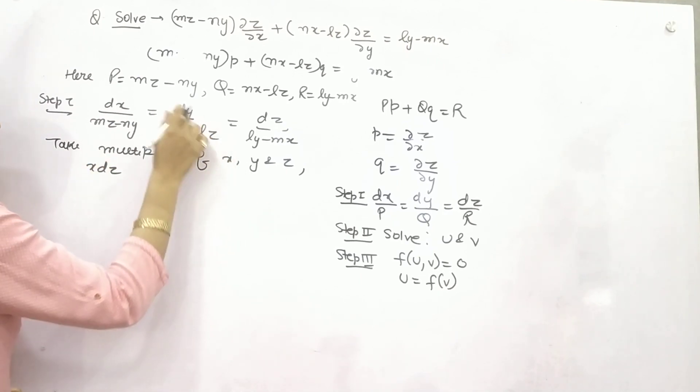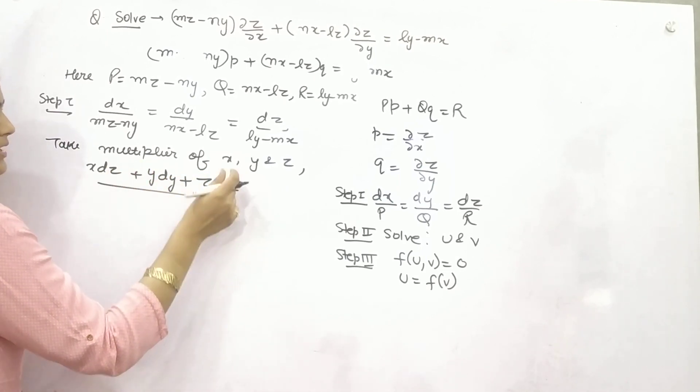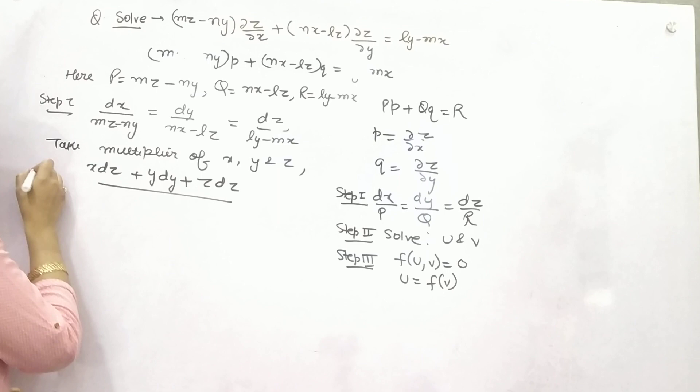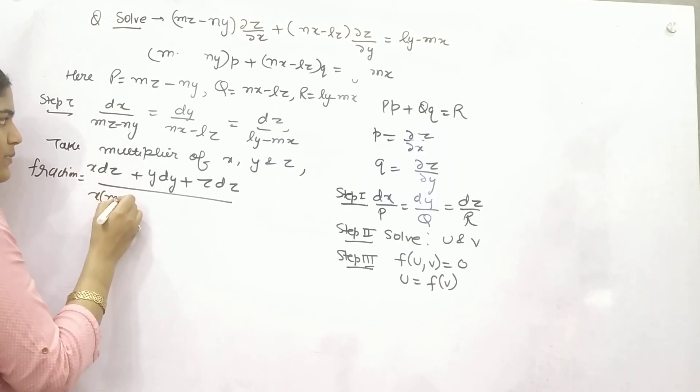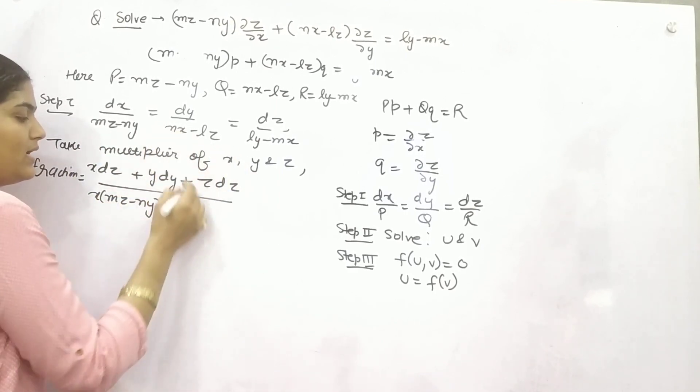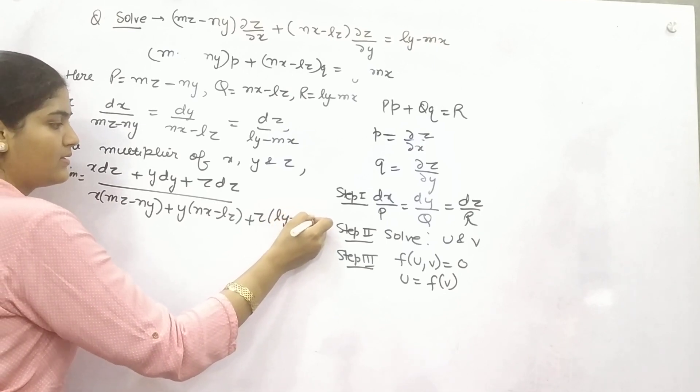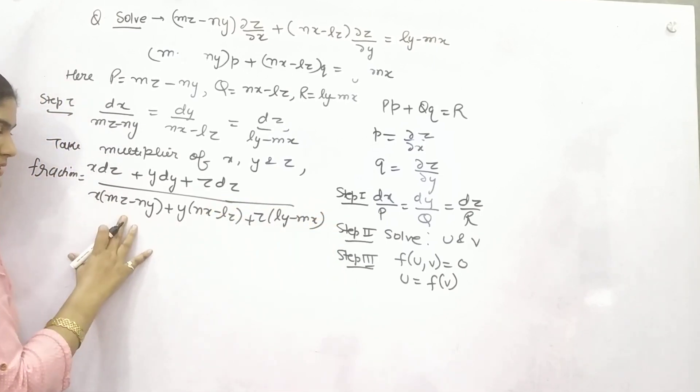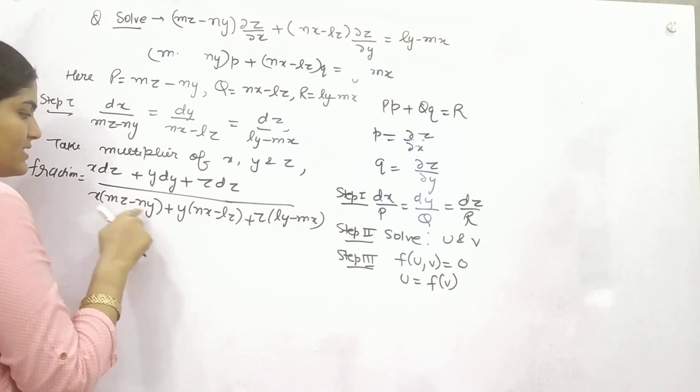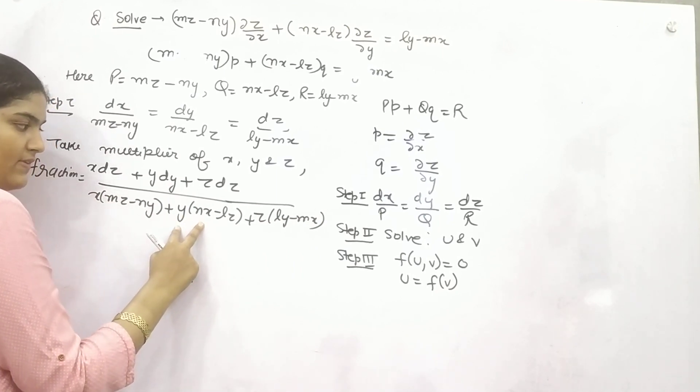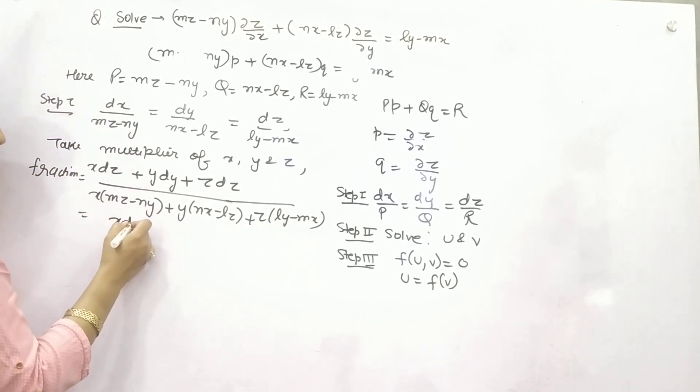You need to multiply X, Y, and Z simultaneously with dx, dy, and dz with addition operation, and do the same in the denominator. So X·dx + Y·dy + Z·dz divided by X(MZ - NY) + Y(NX - LZ) + Z(LY - MX). You can see if you open this denominator form, XMZ will be cancelled with ZMX, XNY will be cancelled with YNX, and YLZ will be cancelled with ZLY. So ultimately in the denominator you will get 0.